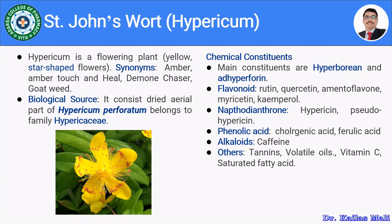The flavonoids present include rutin, quercetin, amentoflavone, myricetin, and kaempferol. The naphthodianthrones include hypericin and pseudohypericin. The phenolic acids include chlorogenic acid and ferulic acid. The alkaloids include caffeine. Certain other chemical constituents present in Hypericum include tannins, volatile oils, vitamin C, and saturated fatty acids.